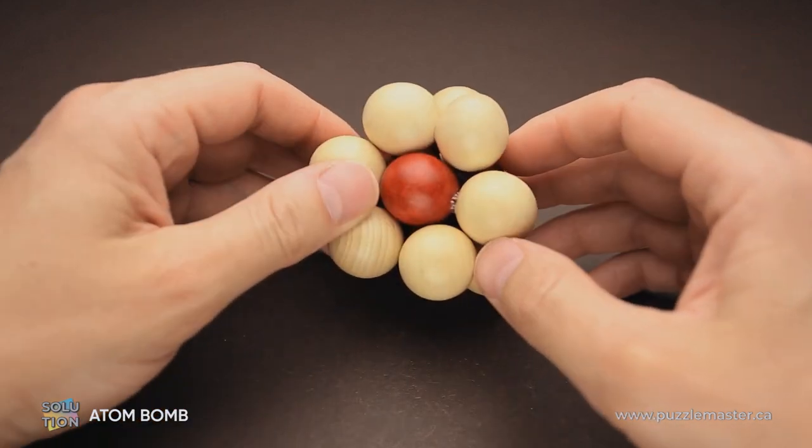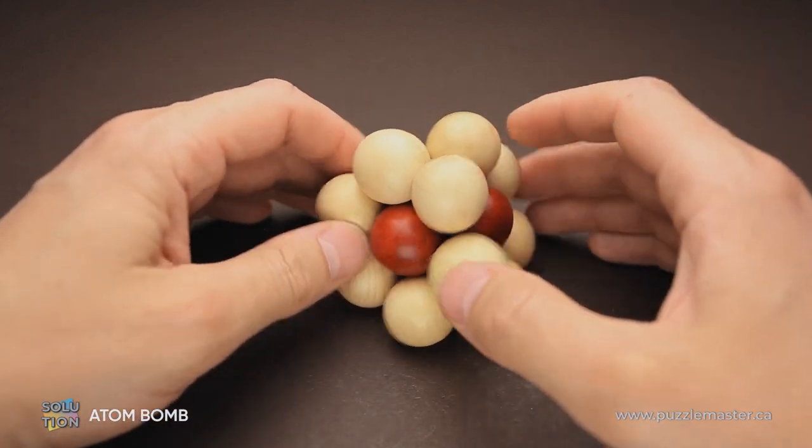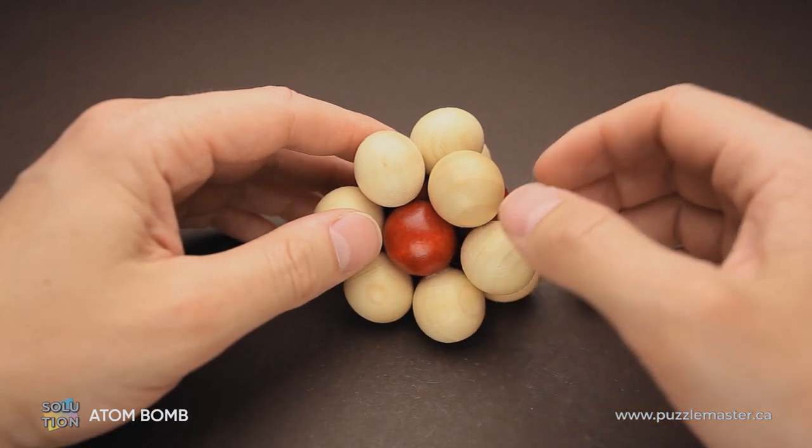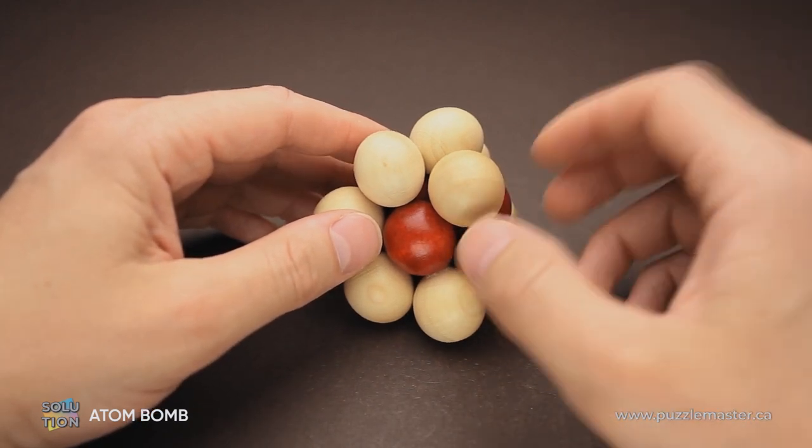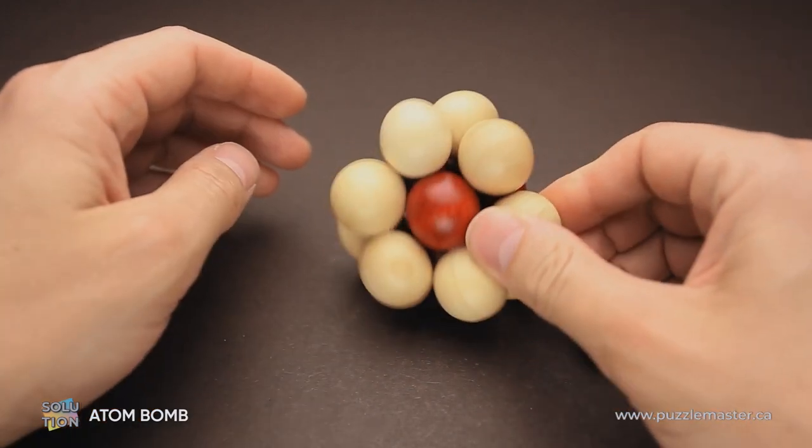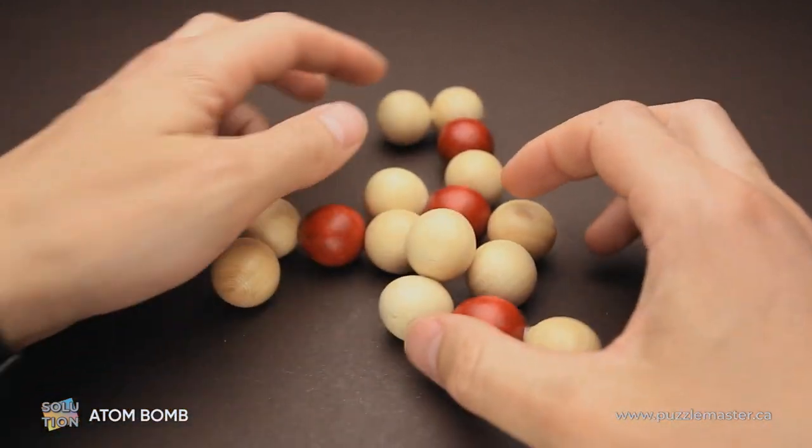The Atom Bomb puzzle is made from wood. It has four identical parts and the disassembling of this puzzle is very easy. Just grab one of the parts, shake it, and everything will fall apart.